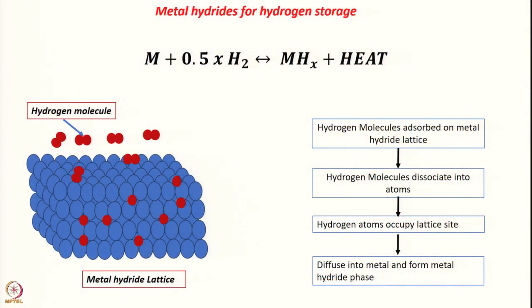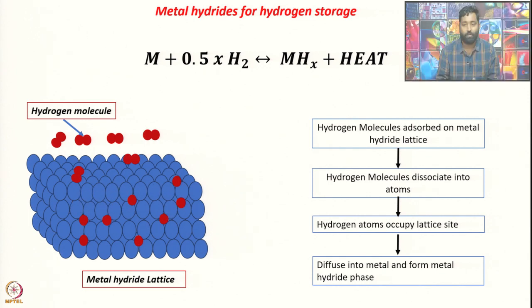In today's lecture, we will discuss the design and development of metal hydride hydrogen storage. To understand how hydrogen is stored in metal hydride: initially, the hydrogen molecule adsorbs on the metal hydride lattice, then dissociates into atoms. After dissociation, the hydrogen atom occupies a lattice space inside the metal hydride lattice.